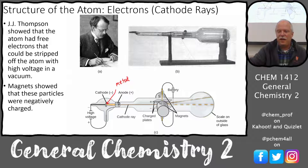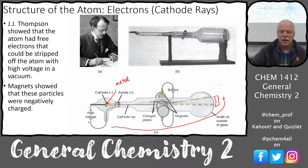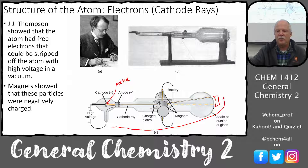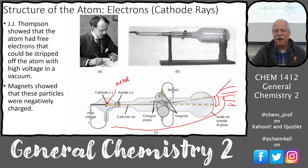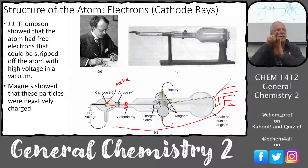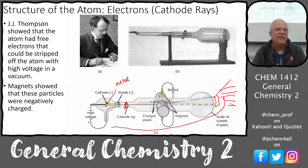We can put a phosphor screen on the tube — when electrons hit it, they emit light. We can steer the beam with magnetic or electric fields and control brightness with a gate. This is a controllable electron beam we can steer around and turn on and off. This is how the first TVs were made — CRT stands for cathode ray tube.